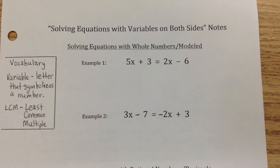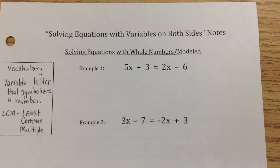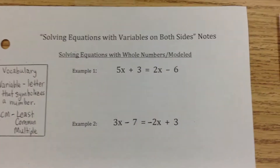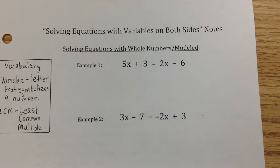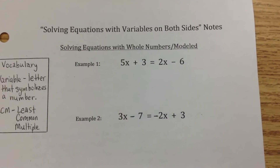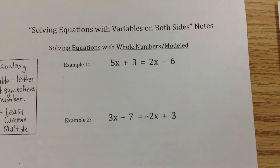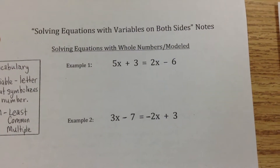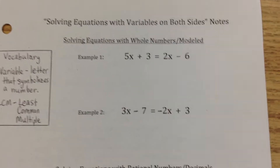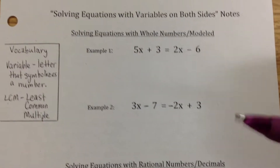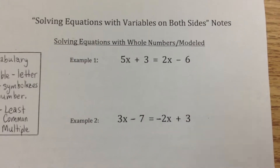These are your notes. We've done a lot of equations where we've only had a variable — a letter that represents a number that we don't know. Usually we only have one variable on one side and we don't have one on the other side. But if you notice on these problems, we have variables on both sides of the equation.